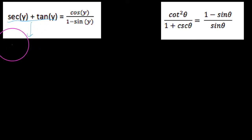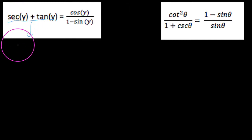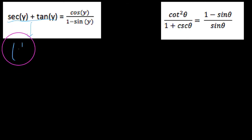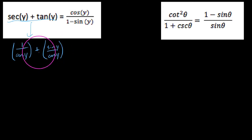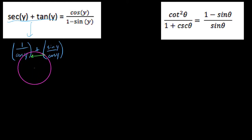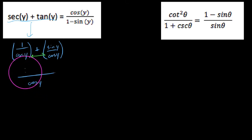Let's start with the left-hand side of: secant y plus tangent y equals cosine y over 1 minus sine y. I don't notice anything squared, so I can't do any Pythagorean substitutions. There's no distribution or factoring to take care of, so let's rewrite this in terms of sines and cosines. Secant of y is 1 over cosine y, and tangent is sine over cosine. We have a common denominator, so we get 1 plus sine y all over cosine y.